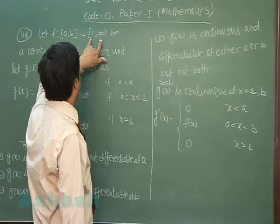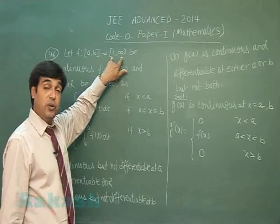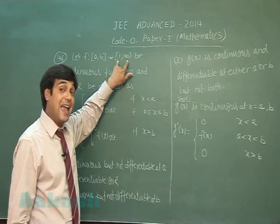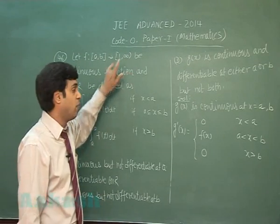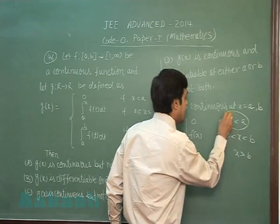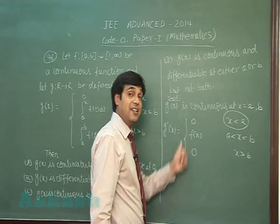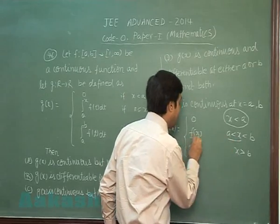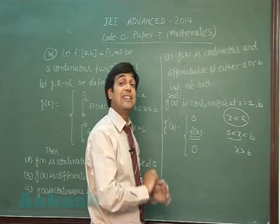But codomain involves 1 to infinity points. Means f(x) can never be 0. So we simply observe when we are moving towards a from the left hand side, it is 0. From the right hand side, it is f(a). So it is not differentiable.